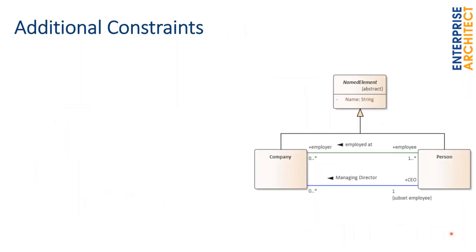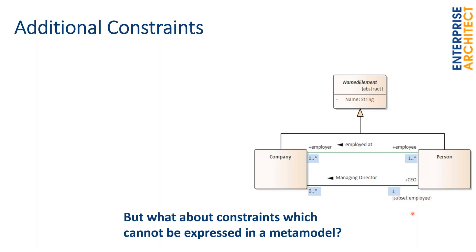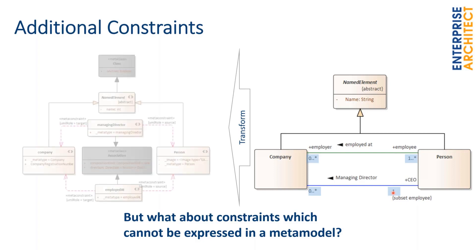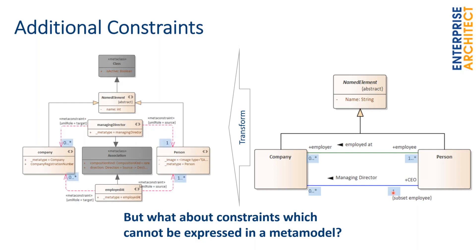What about additional constraints? I've extended the metamodel with multiplicities — the company must have at least one employee attached, and there is a maximum number of CEOs allowed. If we transform this into a UML profile with metamodel constraints, we could add these additional multiplicities as well. Unfortunately, this is currently not considered in model validation out of the box, but I was told by the development team in Australia that this will hopefully be supported in a future version of Enterprise Architect.